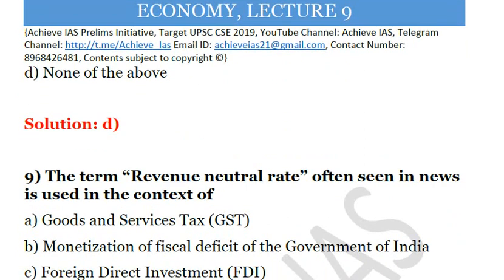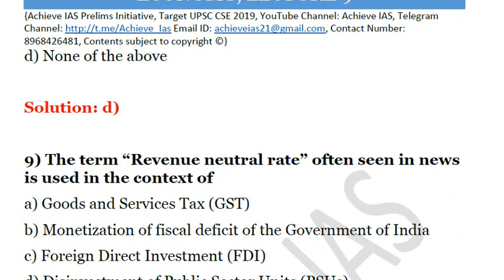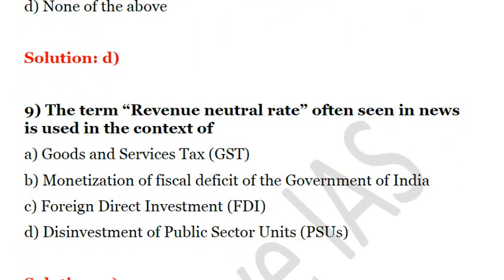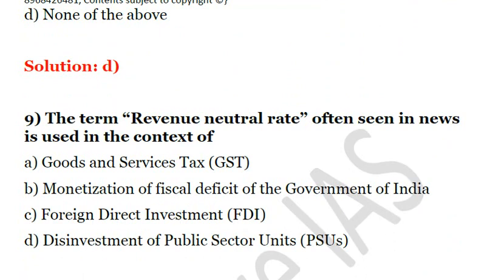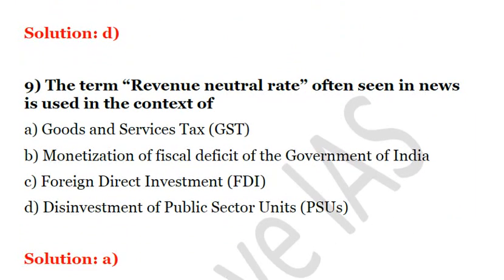Next question: The term 'revenue neutral rate,' often seen in news, is used in the context of — A. goods and services tax, B. monetization of fiscal deficit of the Government of India, C. foreign direct investment, D. disinvestment of public sector units. The answer is A — goods and services tax. Solution is A.